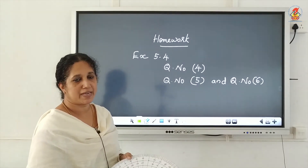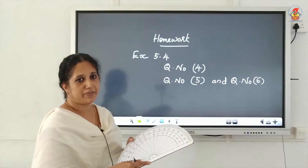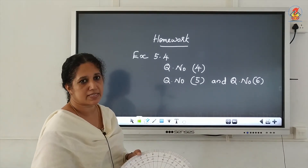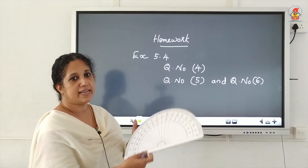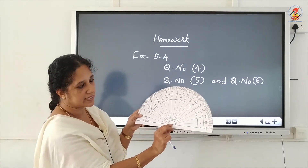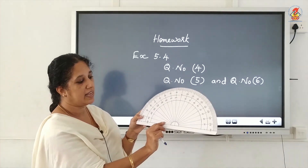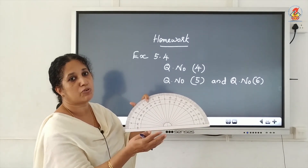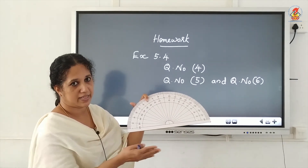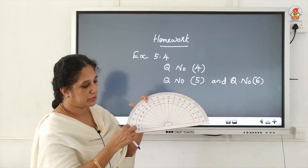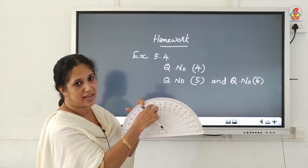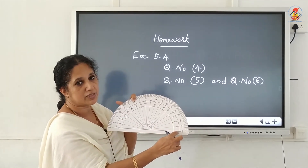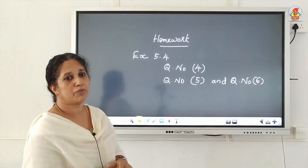Using the protractor, measure the angles given in your textbook. The homework is Exercise 5.4, question numbers 4, 5, and 6 — angles are given in your textbook. Place the protractor so the center coincides with the vertex. Check which scale's zero coincides with one arm of the angle and use that scale to measure. If the outer scale zero touches the arm, use the outer scale. That is all for today's class. Thank you.